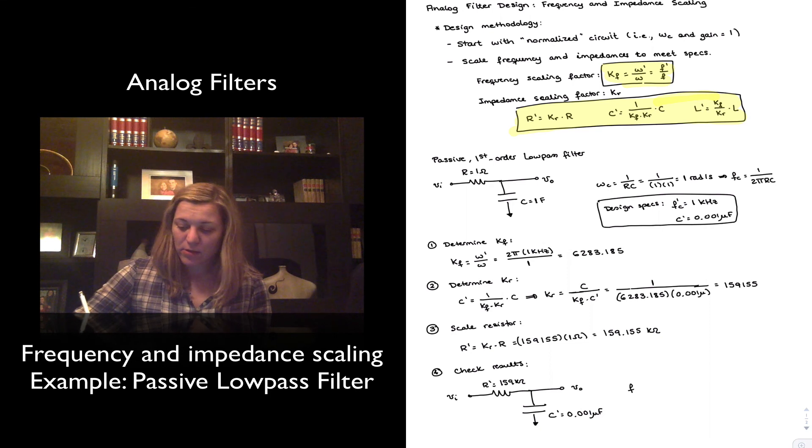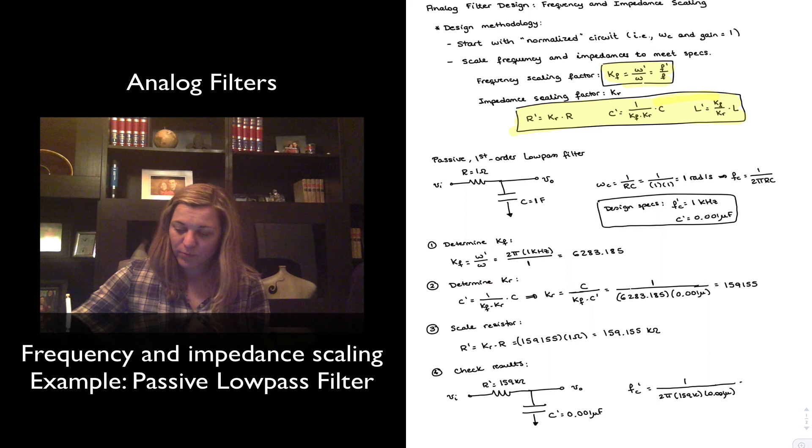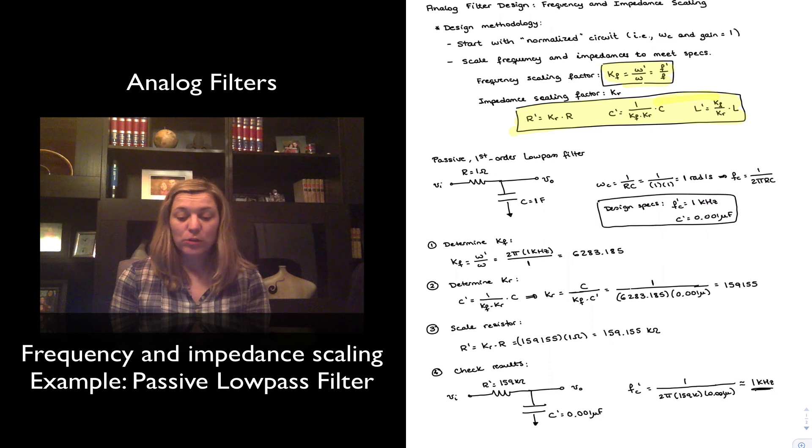I can calculate my fc prime as being 1 divided by 2 pi, 159k, 0.001 micro, which is approximately equal to 1 kilohertz. That is the spec that I was trying to meet.